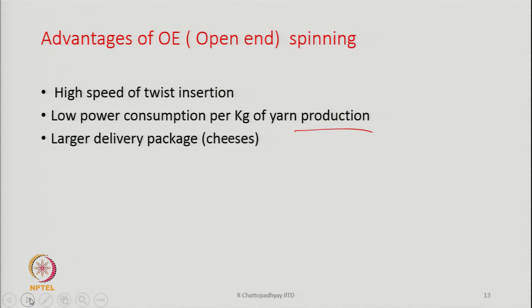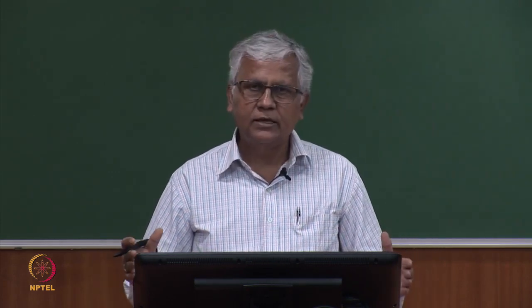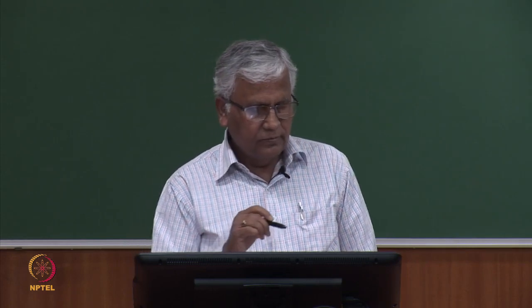Larger delivery package — package size can be quite big. In ring spinning, the package size is limited because the package has to stay within the balloon. If you want a big package, you have to increase the ring diameter — that will increase the balloon tension, the yarn will break, and if you increase ring diameter the number of rings that we can accommodate in a given length will be much less. So the number of production positions will go down. The main problem will be the breakage of the yarn because a larger ring means a lot of tension in the balloon — the yarns will break. So a large package we cannot have in ring spinning.